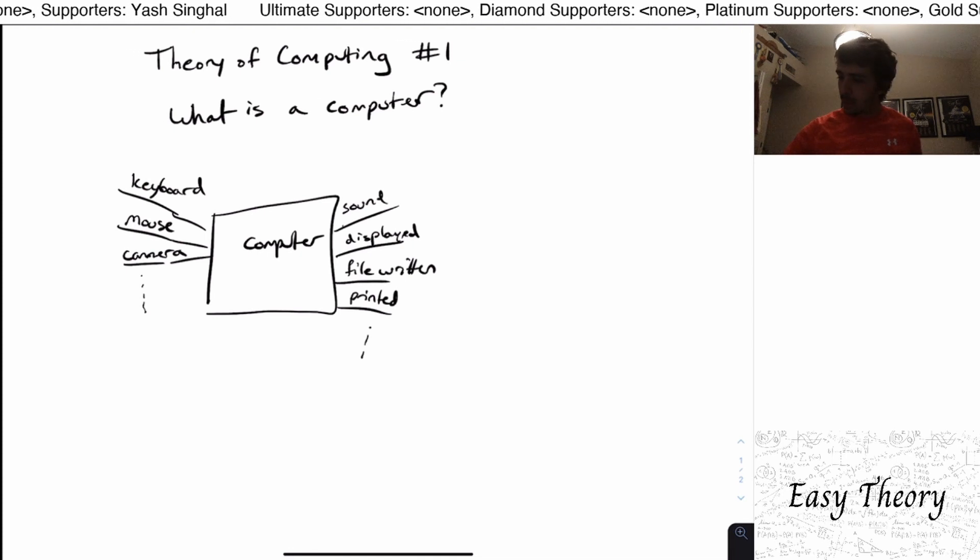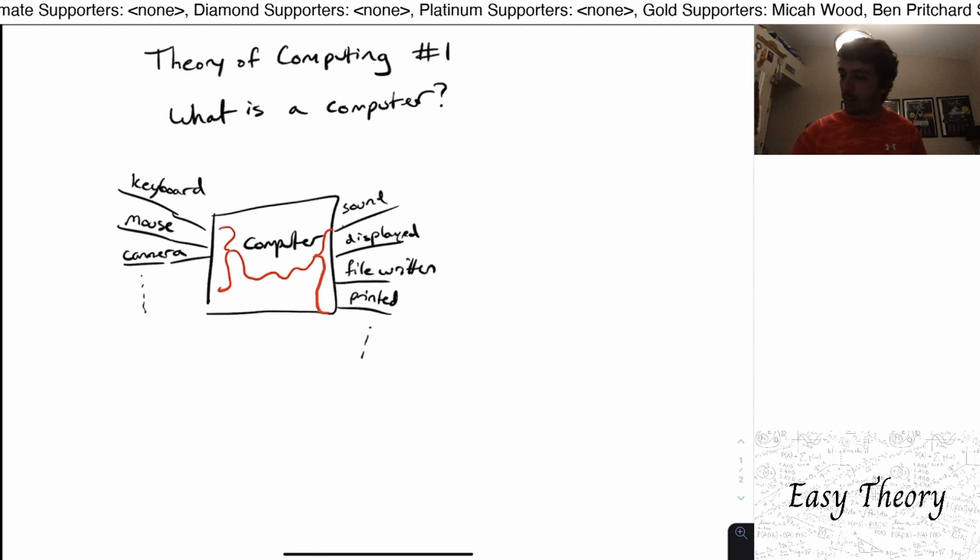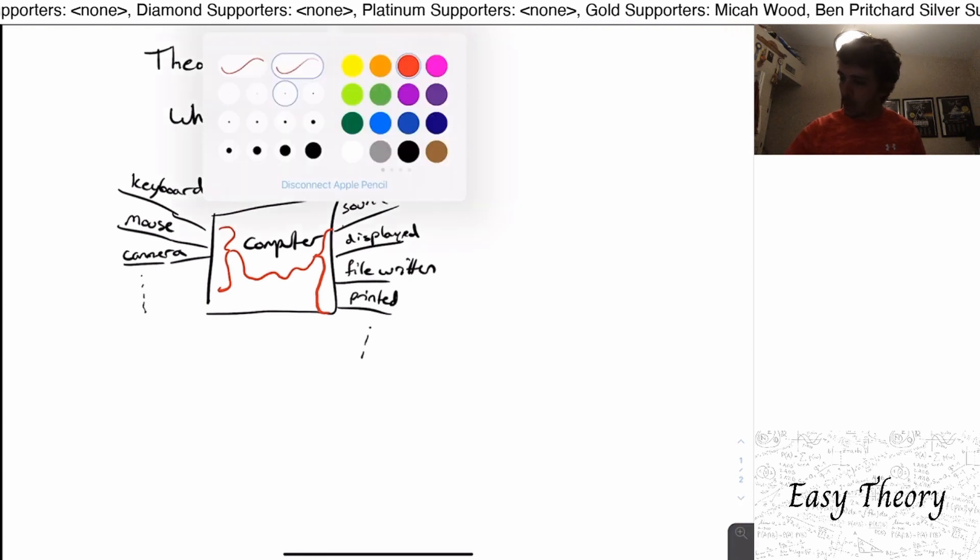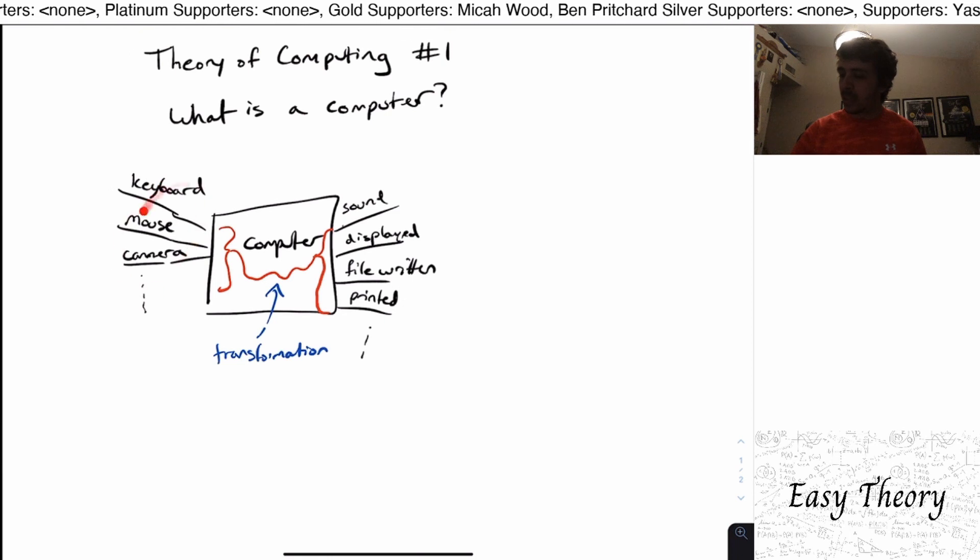So the main idea of what a computer actually does is it takes all of these inputs, and it does some kind of function to all of these outputs. So the computer, in some sense, is doing this transformation that is transforming all of these inputs through some process into these outputs.